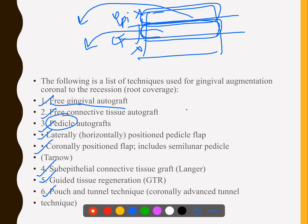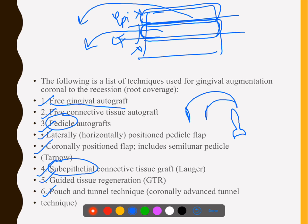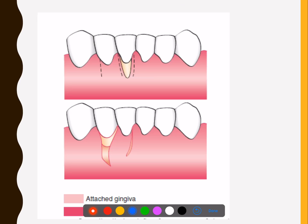A pedicle graft means the graft is pediculated — it remains attached. A lateral pedicle graft moves laterally, while a coronally positioned flap moves in the coronal direction — it is called a coronally positioned flap depending on the direction of movement. A sub-epithelial connective tissue flap is slightly different from a simple connective tissue graft, mainly differing in the way it is placed back at the recipient site. GTR and pouch and tunnel techniques are more recent — just remember those names.